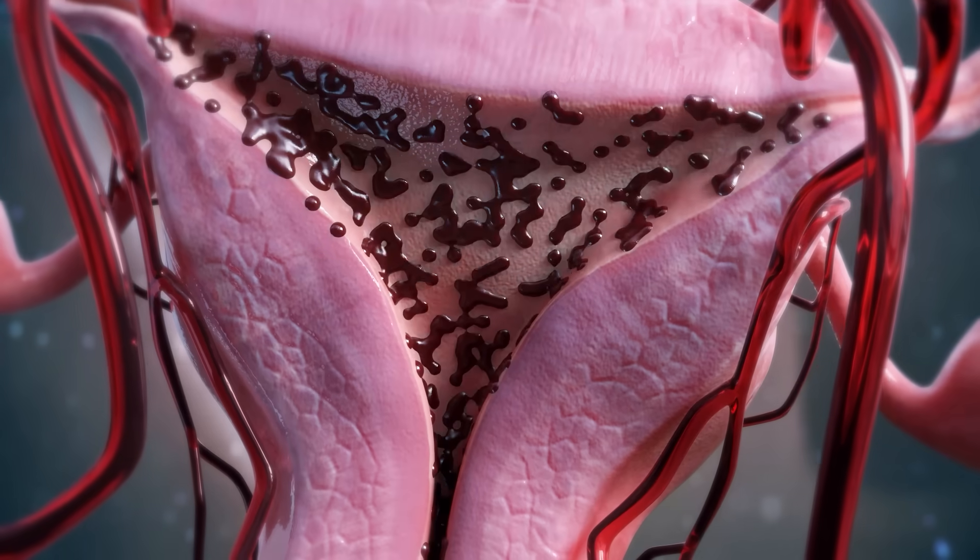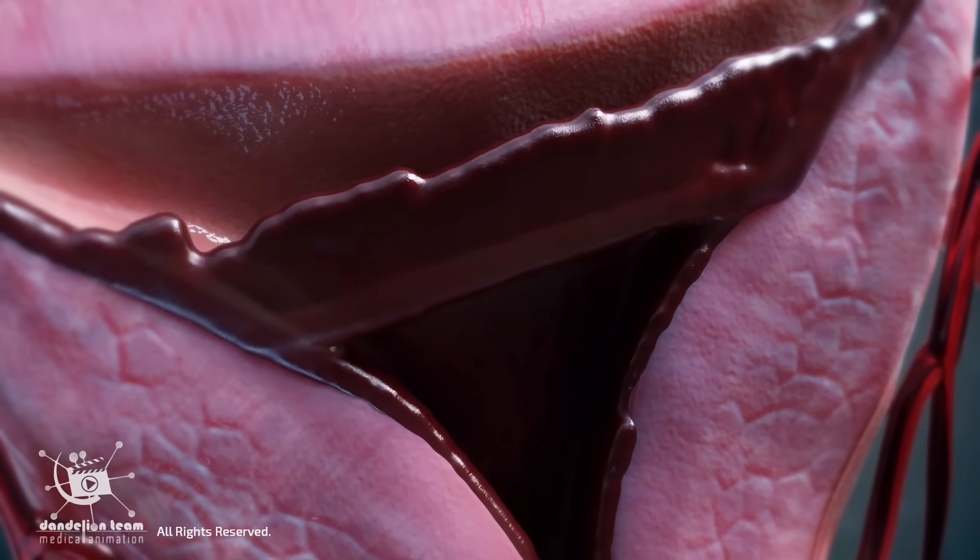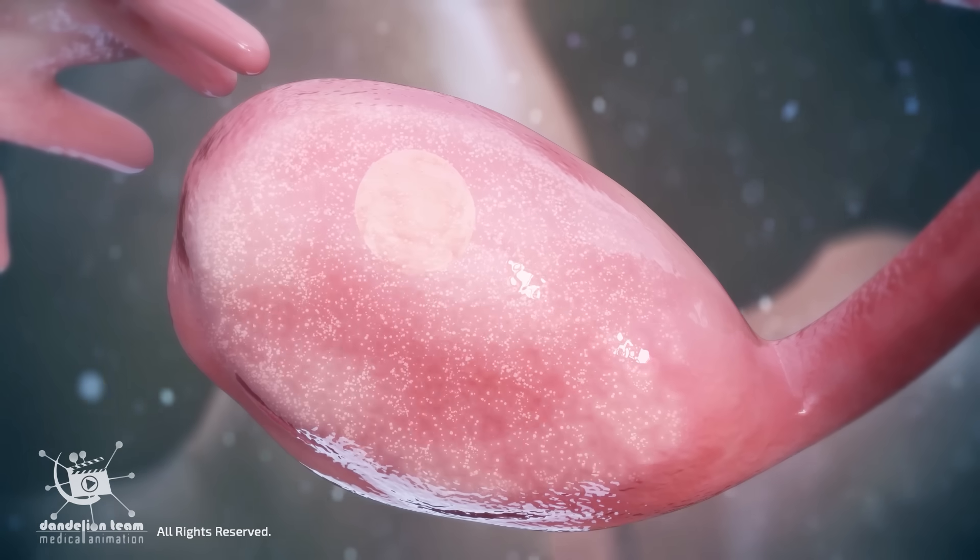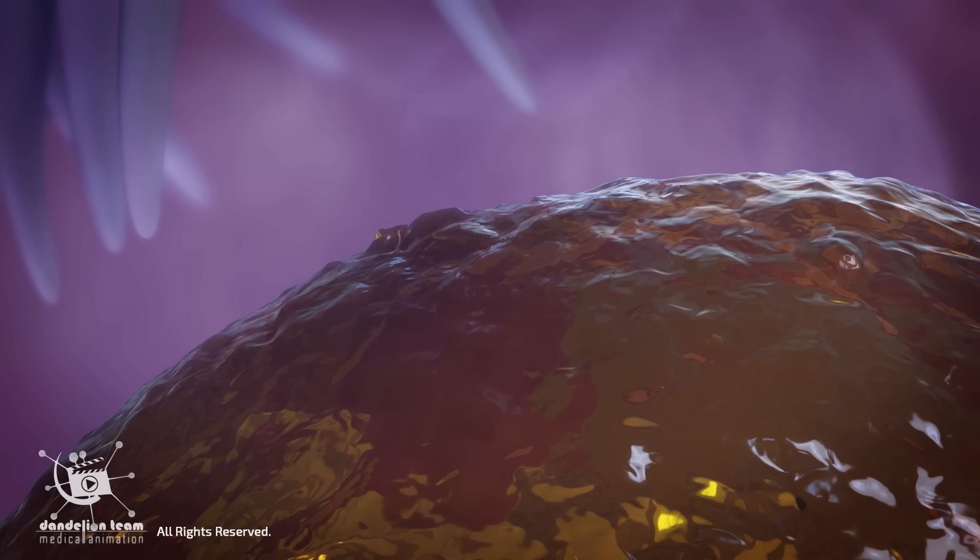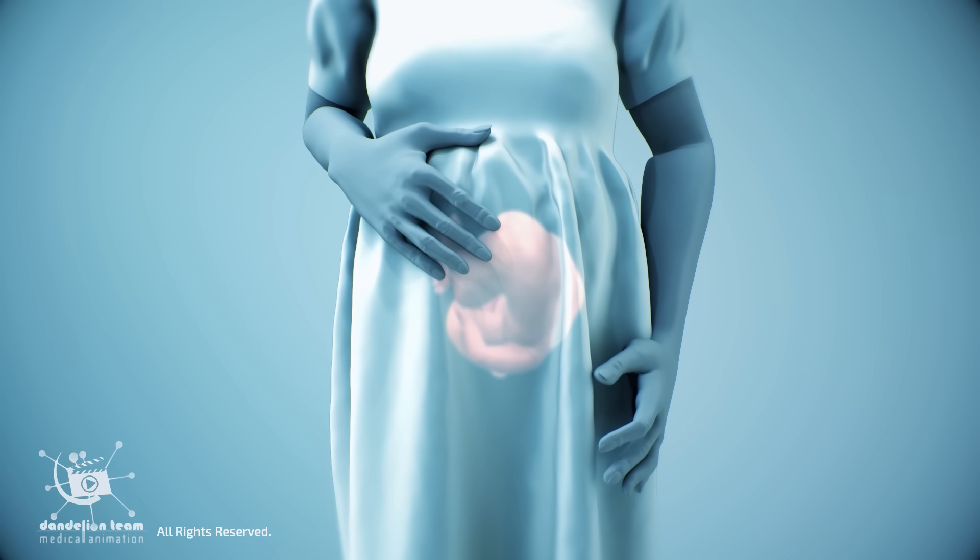Like women, men experience hormonal shifts and changes affecting their moods and sexual desire. Females experience a menstrual cycle that lasts roughly 28 days and is characterized by hormonal fluctuations throughout. This cycle regulates ovulation and prepares the female body for pregnancy.